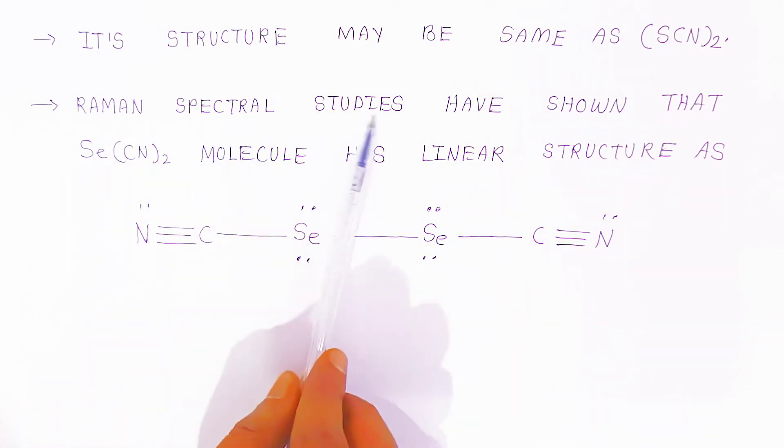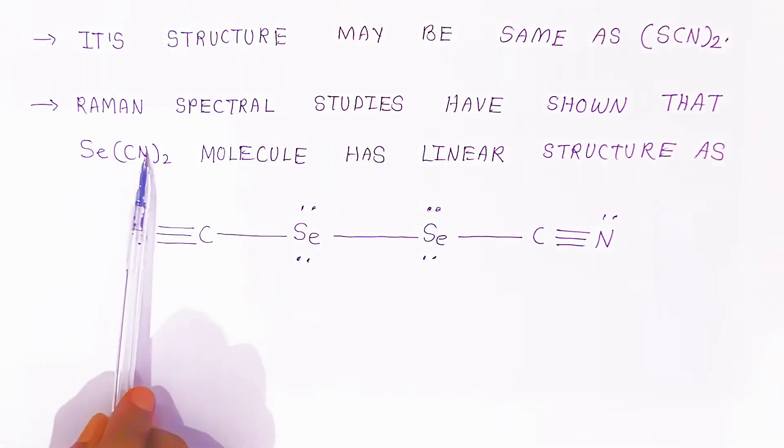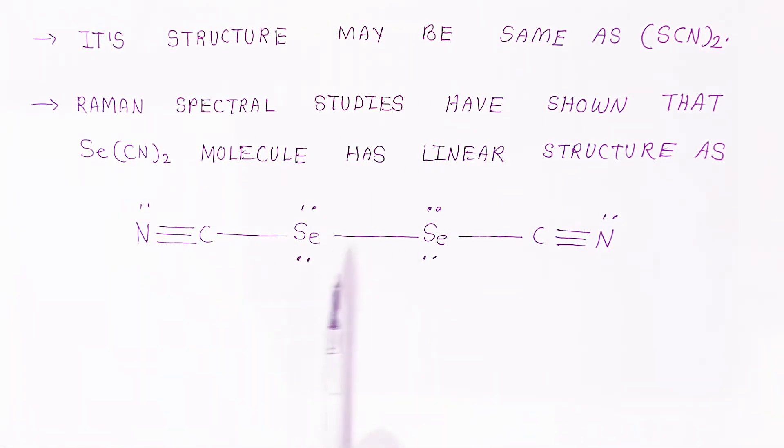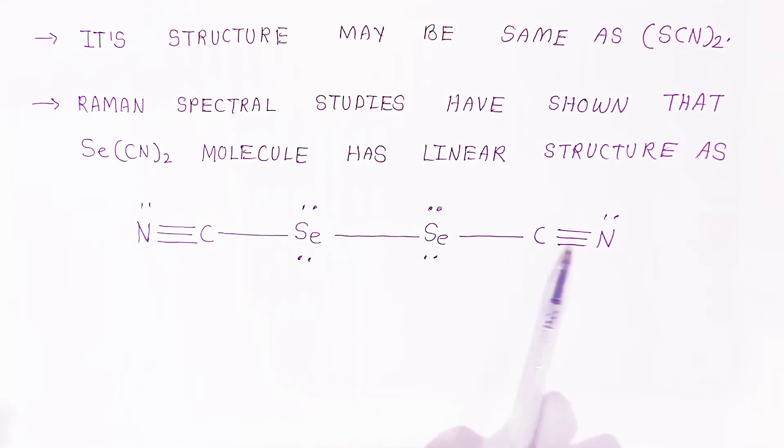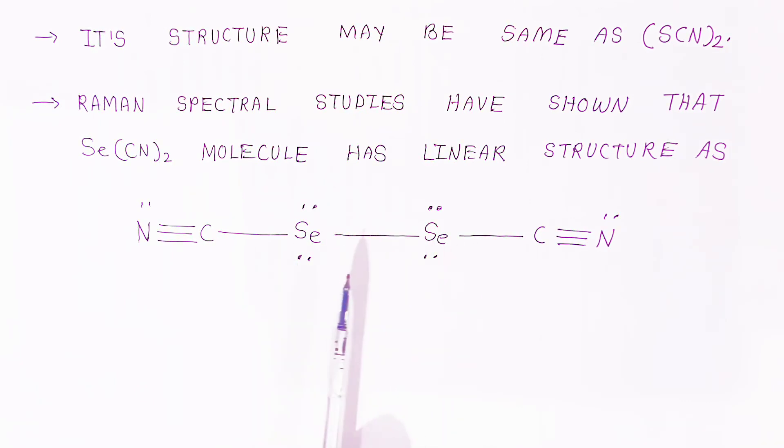Raman spectral studies have shown that selenocyanogen molecule has linear structure. This is the structure of selenocyanogen. It is a linear structure. Selenium atom combines with selenium with single bond and combines with two cyanides. This is the structure which looks like linear structure. This way you can write down the structure.